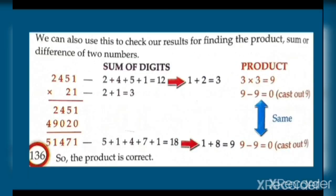We can also use patterns to check our results for finding the product, sum, or difference of two numbers. Jaise 2451 × 21 ka answer check karna ho: pehle digits ko add karo — 2451 mein 2+4+5+1=12, phir 1+2=3. 21 mein 2+1=3. 3×3=9. Answer ke digits add karo — agar woh bhi 9 aaye toh product sahi hai. 9−9 cast out of 9 means the product is correct.